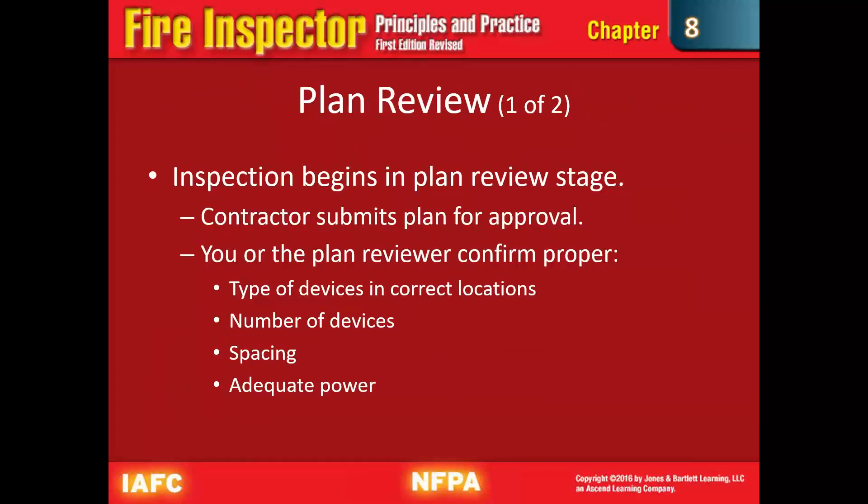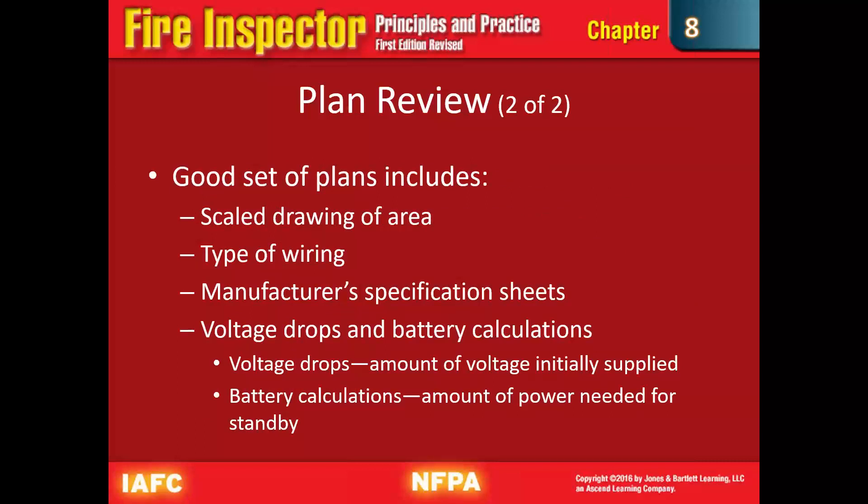Inspection of fire alarm systems begins in the plan review stage when the contractor submits plans for approval. We're going to look at everything, double-check it, and make sure it's suitable for the situation, size, and operation. As the plan reviewer, you confirm the proper type of devices, the number of devices, spacing between heads, adequate power sources, and wiring. You'll also get into how many visual strobes are needed, the required decibels, and all the different factors involved — all of which have to be tracked down in the codes and evaluated with good judgment.